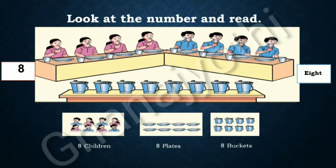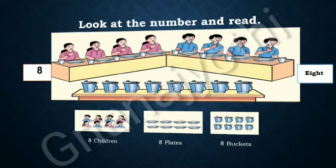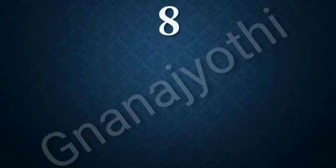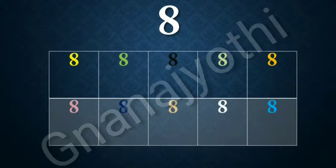The things which we see in this picture contain 8 in number. 8 can be written like this. There are no straight lines but it contains curved lines.